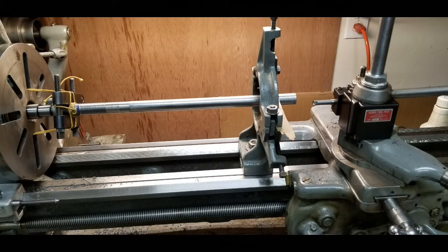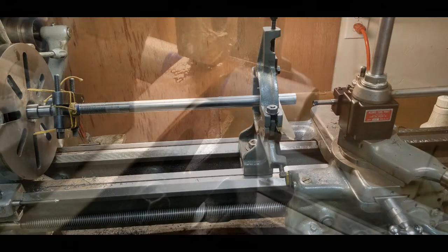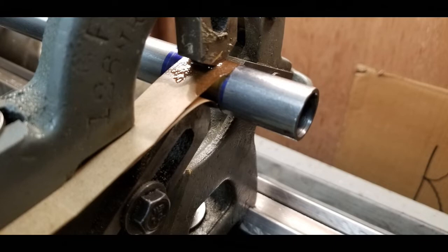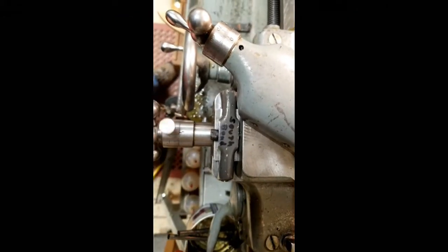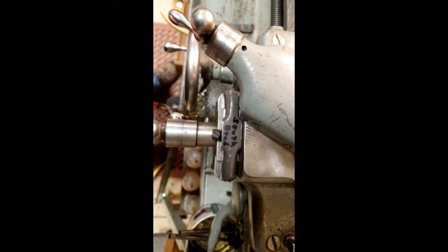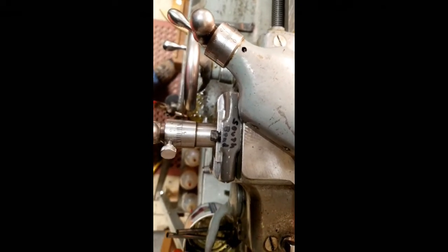So here's the next setup. Remember that bearing surface that we put on there? Well, I'm putting my fixed steady out there. And I've put a piece of paper bag between the pawls and the bearing. And that works great. Soak it with oil. I've used that quite a bit. It works great. It doesn't leave a mark.